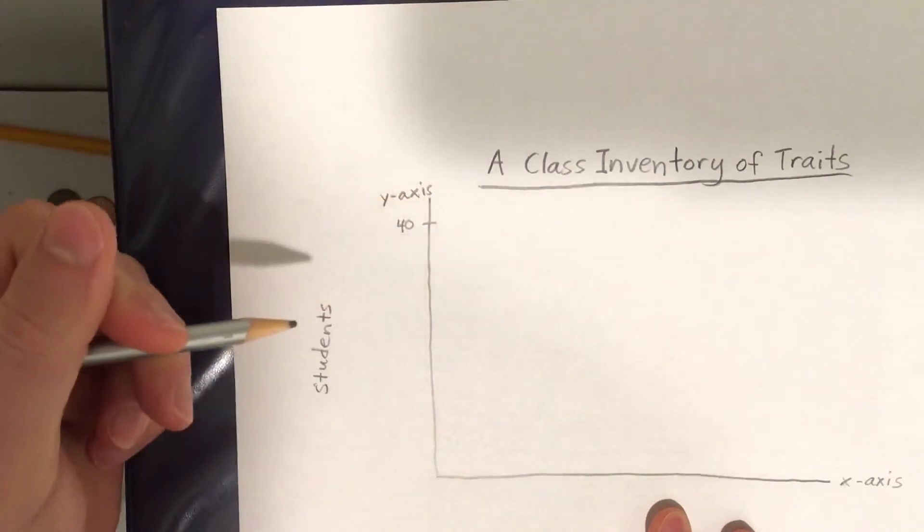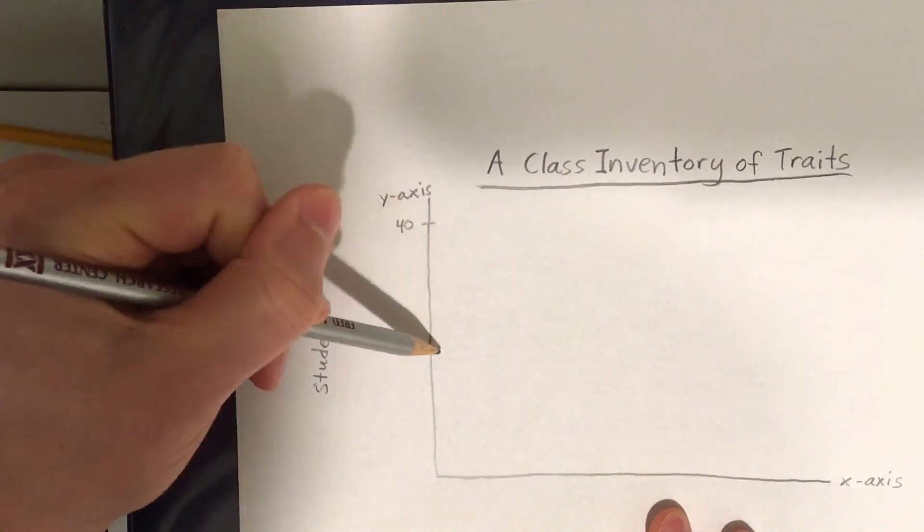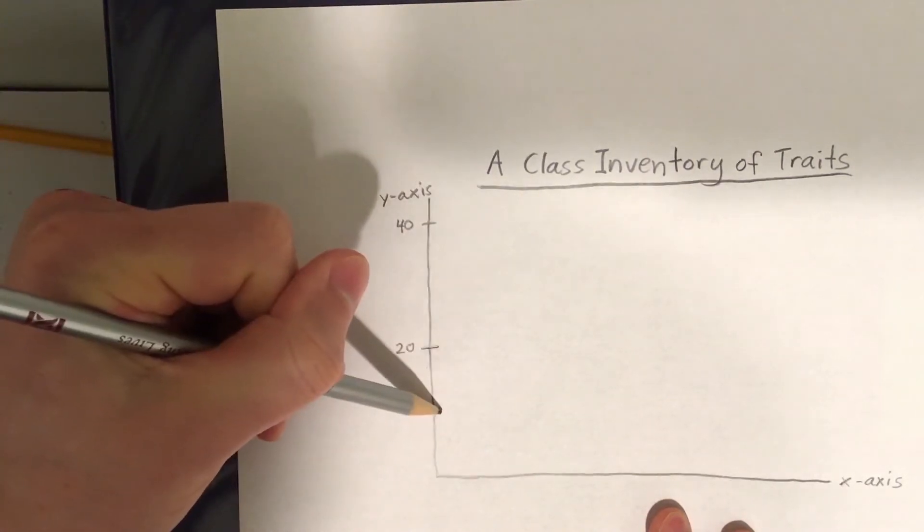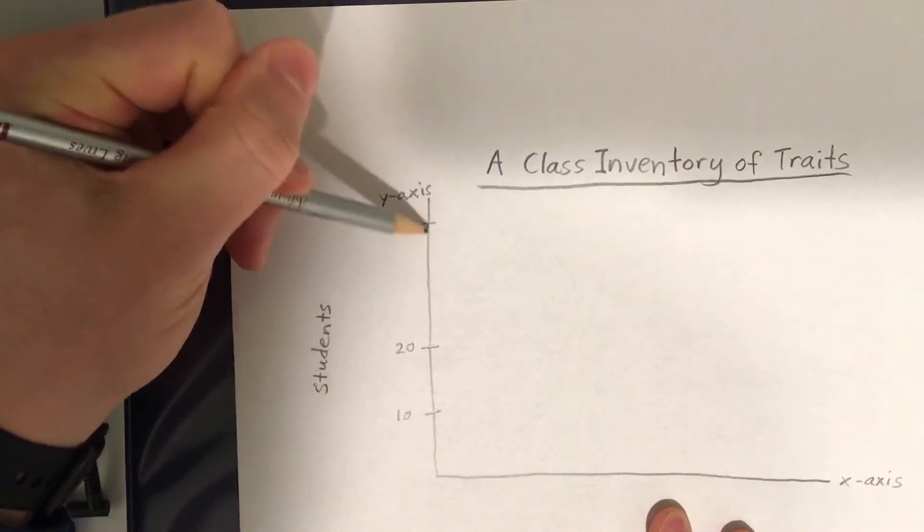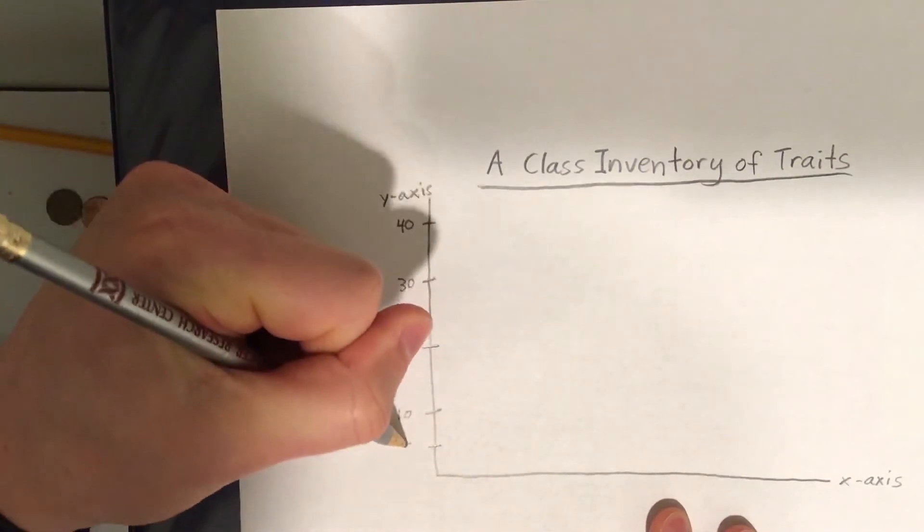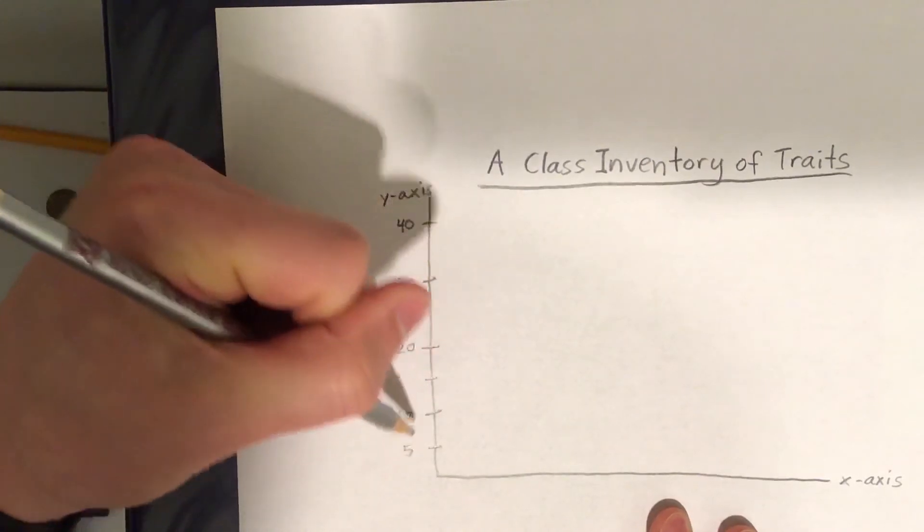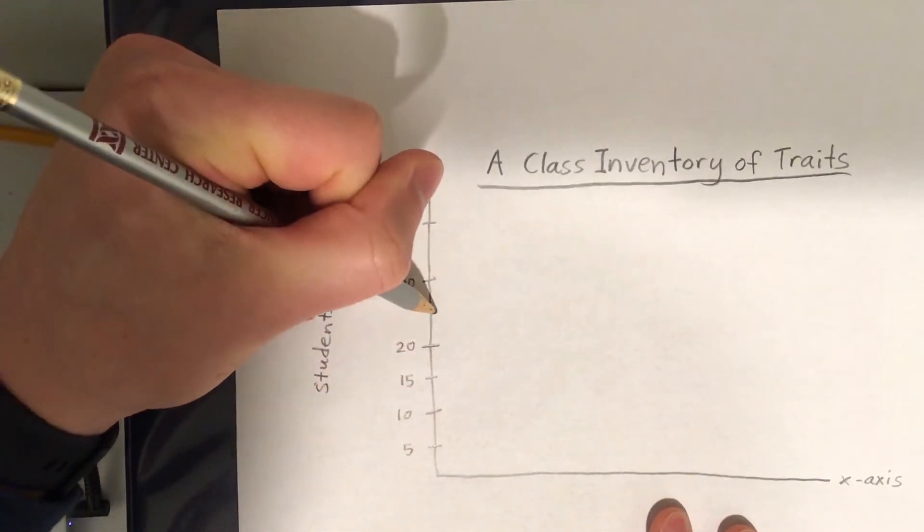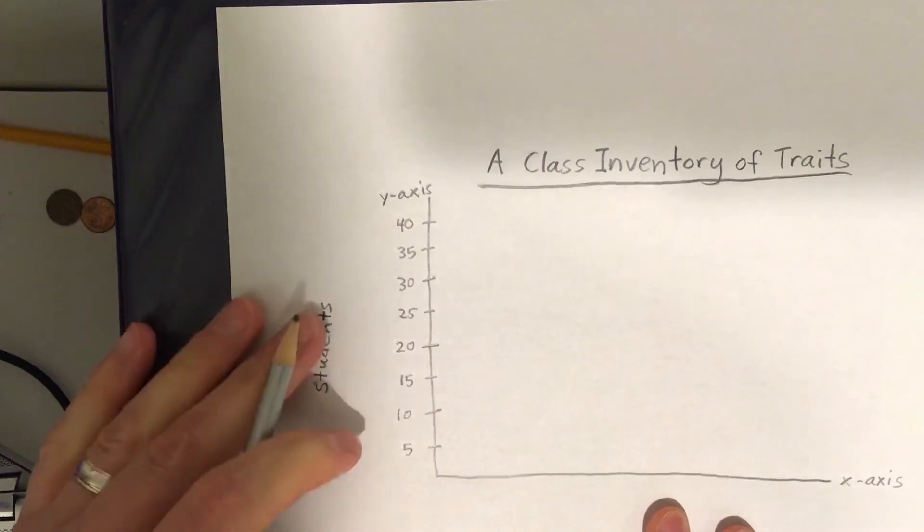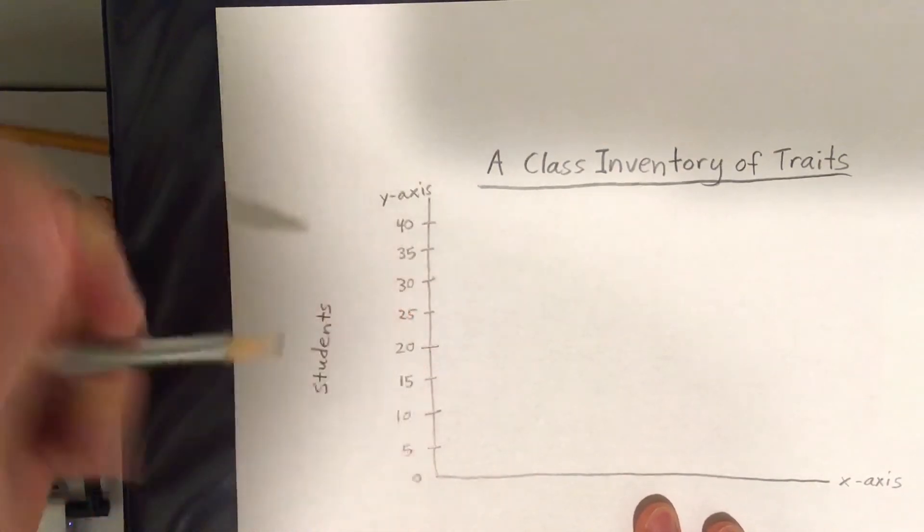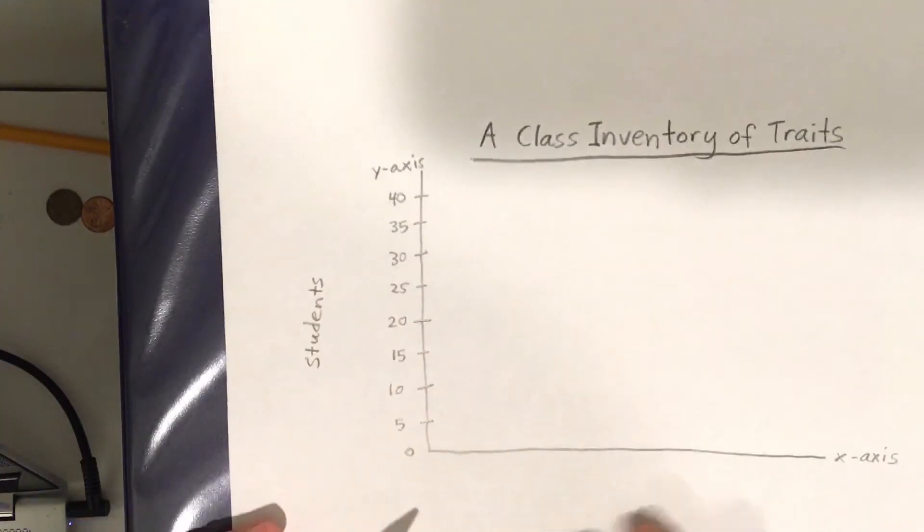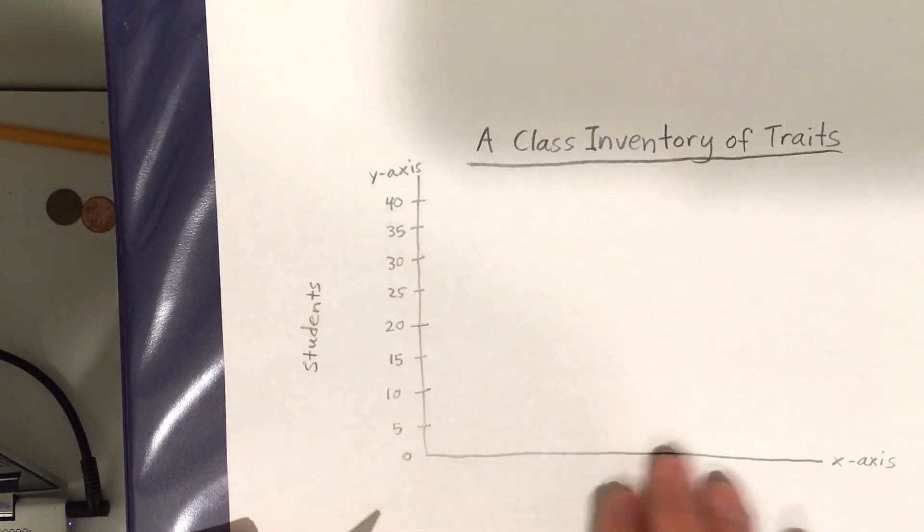Obviously we are not going to have that many because we only have 37. But if we measure about half way that's going to be about 20. Because half of 40 is 20. And then half of that is 10. And in between 40 and 20 is 30. And then let's do increments of 5. So 5, 10, 15, 20, 25, 30, 35. If we were doing this on graph paper it would be much easier because of the fact that we would have lines already. But if you are using blank paper then just do your best.